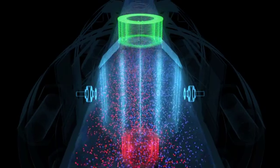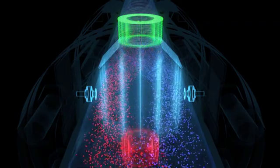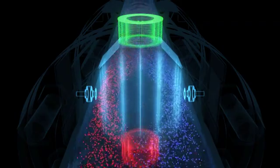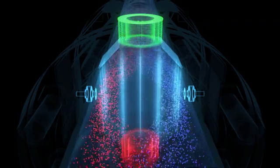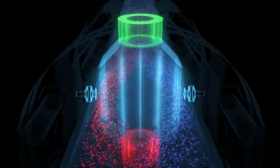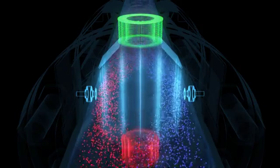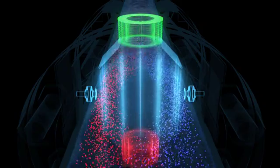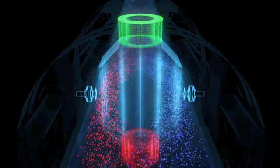However, as soon as the liquid starts to flow in the measuring tube, the magnetic field applies a force to the charged particles. As a result, the positively and negatively charged particles in the liquid are separated and collect on the opposite sides of the tube wall.